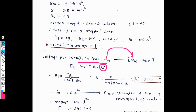Using the EMF equation: ET = 4.44 × f × Φm, and Φm = Bm × Ai, we substitute to get ET = 4.44 × f × Bm × Ai. Rearranging for Ai: Ai = ET / (4.44 × f × Bm). Substituting all known values gives us the net iron area Ai.